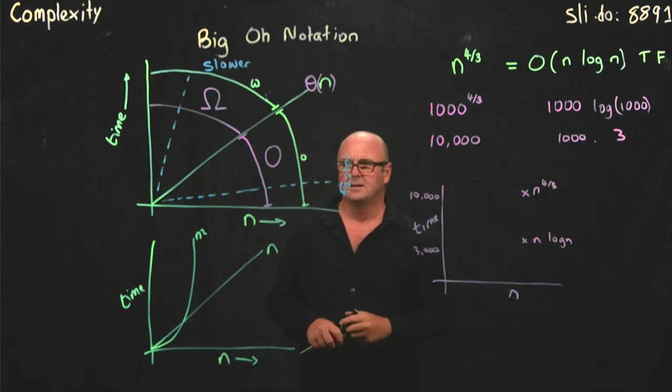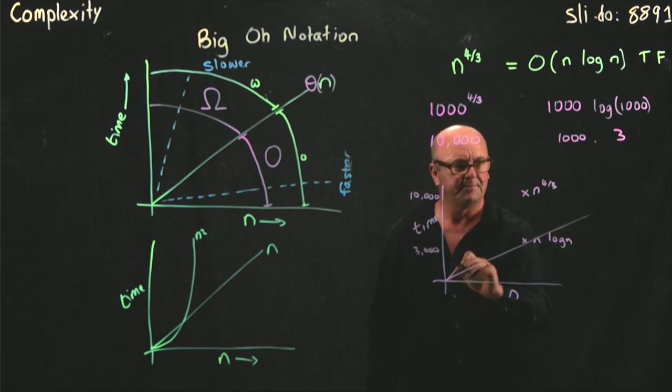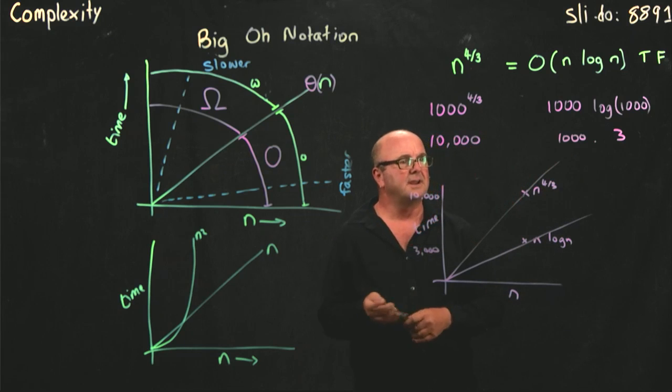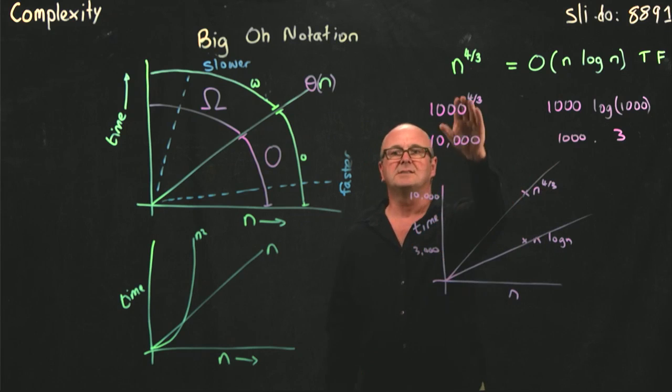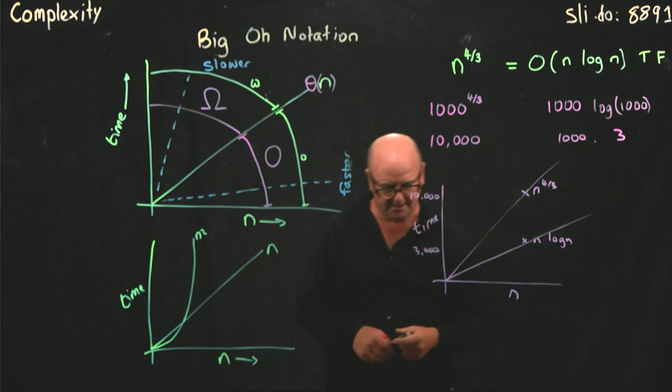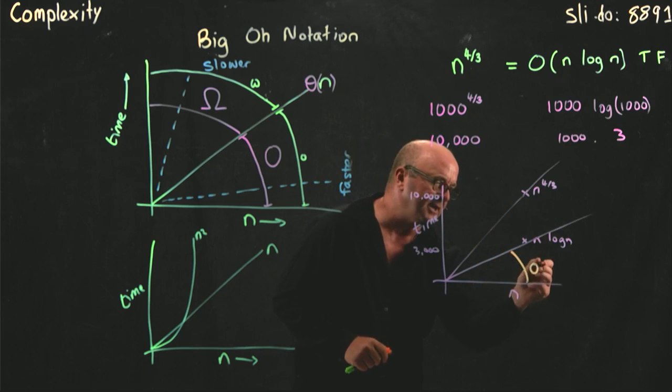And n log n is going to be down here at 3,000. Okay? We know that both these lines have to go through 0, 0. It doesn't matter what shape they are. And so, now we can answer the question, is n to the 4 thirds big O of n log n?